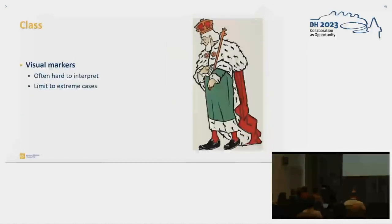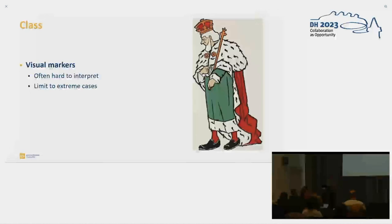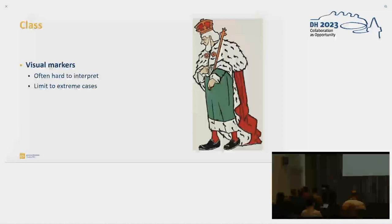For class, we had a different problem where the visual markers were often very hard to interpret, especially for the historical data — we simply did not know where to put people. So we decided to limit ourselves to extreme cases: royal attire would be higher class and a beggar in the streets would be lower class. But everything in between we decided to pull under middle class. That also influences what we can say at the end about middle class, because if you pull everything there, you can't make very explicit statements about how middle class is represented.